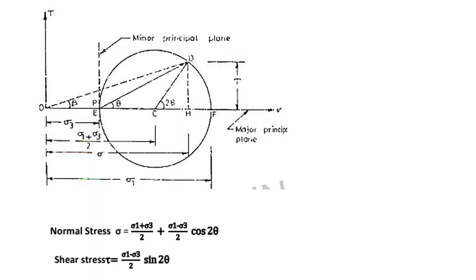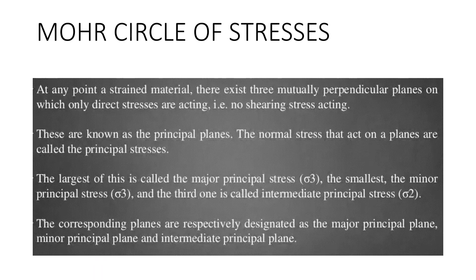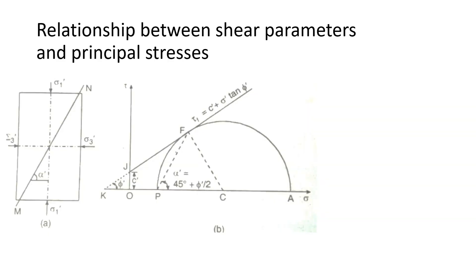This is a representation of the Mohr circle. The current state of stress is represented by the circle. The state of strength is the same. The Mohr circle represents the director stresses acting in the element. The largest stress is the major principle stress and the minimum is the minor principle stress.